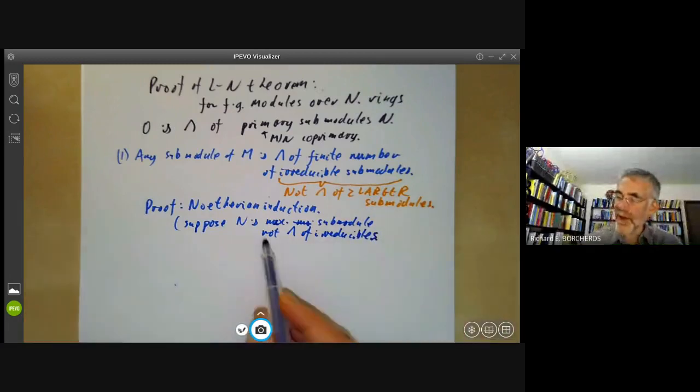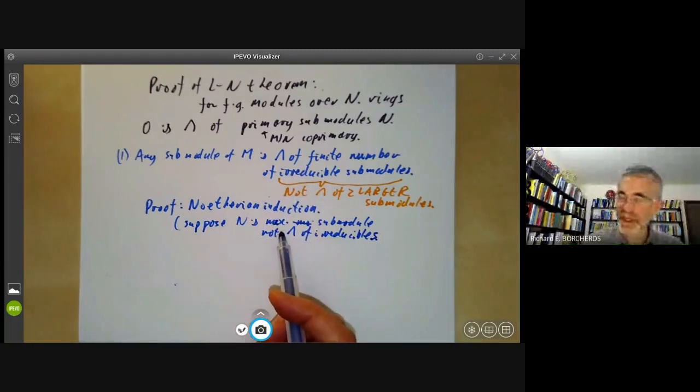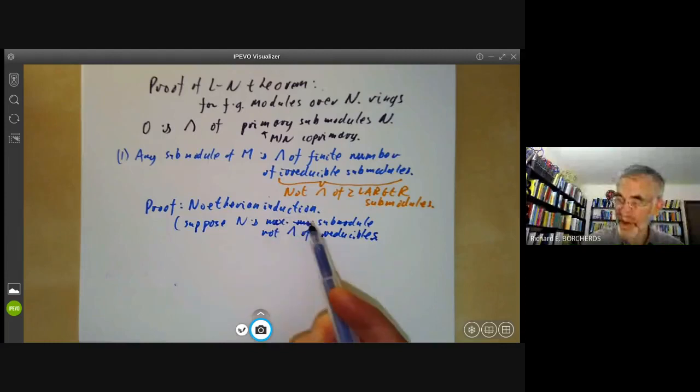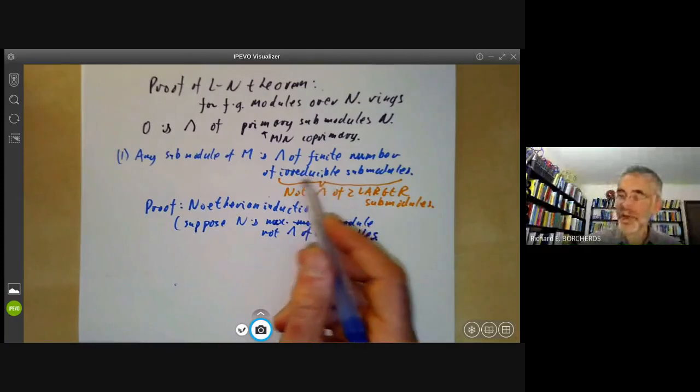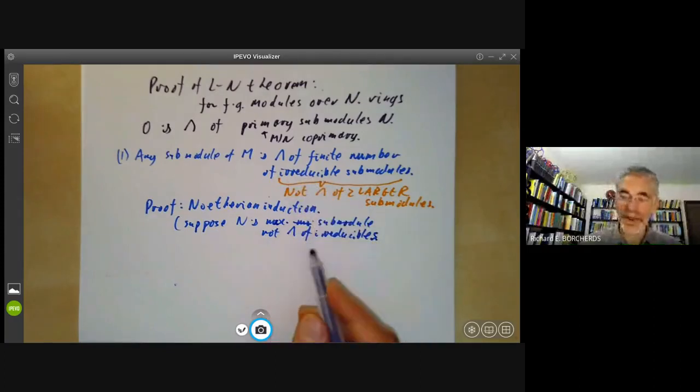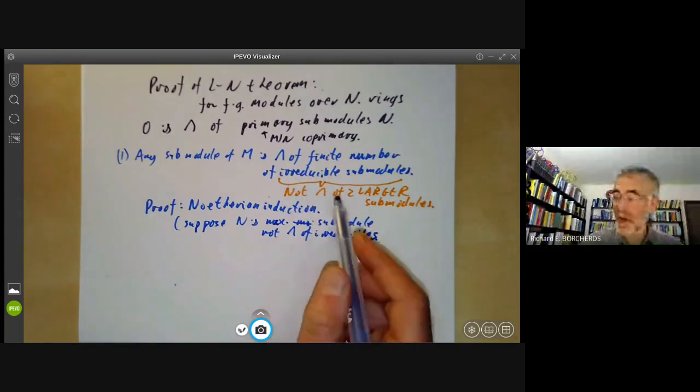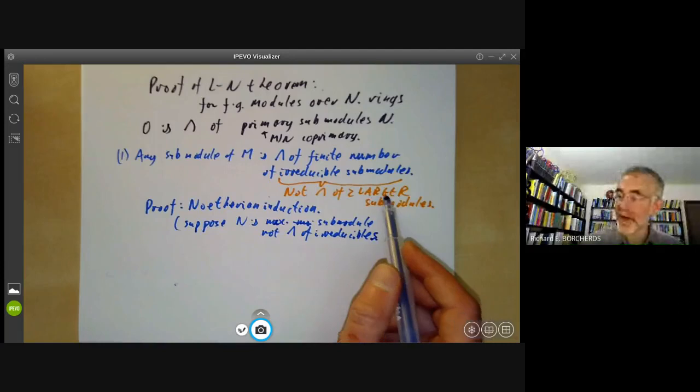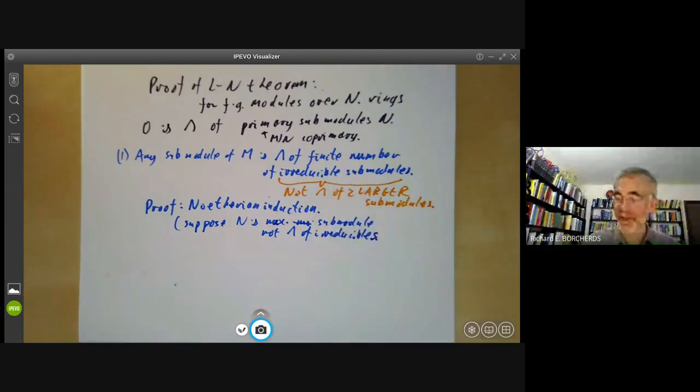Such a module, if the theorem isn't true, must exist by Noetherian induction. On the other hand, either this module is irreducible, in which case we're done because it's an intersection of itself, or it's not irreducible, in which case it's the intersection of two larger submodules. By induction, each of these two larger submodules must be a finite intersection of irreducibles. So step one is just completely routine.